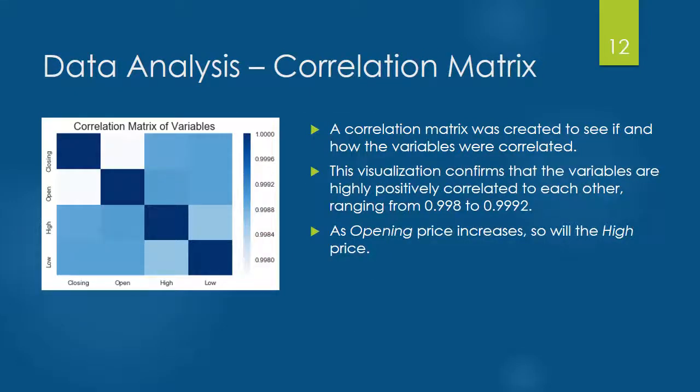The next part of exploring the data is to create a correlation matrix to see if and how each feature is correlated. Each square represents a feature.